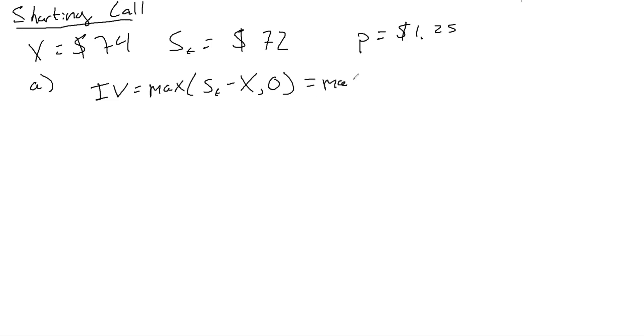So this would be equal to the max of 72 minus 74, which is negative two. So the intrinsic value is zero. And the time value is the option premium minus intrinsic value. So this would be $1.25 minus zero. So the time value of the option is $1.25 equal to the premium.